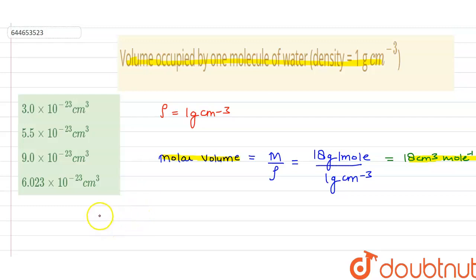And here if we want to find the volume of one molecule of water, then we have to divide the molar volume with Avogadro number. Since we know that one mole of any substance contains 6.023 × 10²³ particles, which is also called Avogadro number.